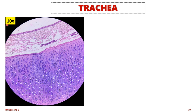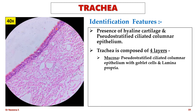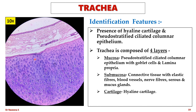Now let's see the slides of the respiratory system. Trachea: here is the slide seen under low magnification. It is identified by the presence of hyaline cartilage covered by pseudostratified ciliated columnar epithelium. The wall of the trachea is composed of four layers from inside to outside: mucosa, submucosa, cartilaginous layer, and adventitia. The mucosa is lined by pseudostratified ciliated columnar epithelium with goblet cells, supported by lamina propria of loose connective tissue with blood vessels. The submucosa is loose connective tissue with elastic fibers, blood vessels, nerve fibers, and serous and mucous glands. The cartilaginous layer is hyaline cartilage surrounded by perichondrium. The adventitia is loose connective tissue with blood vessels.